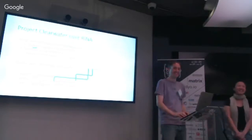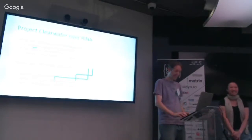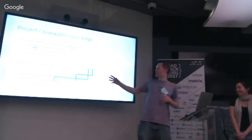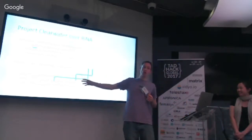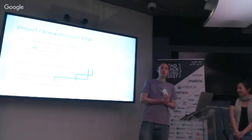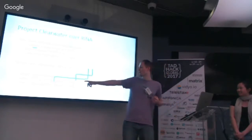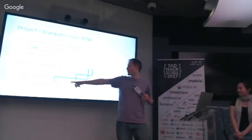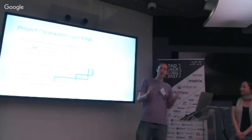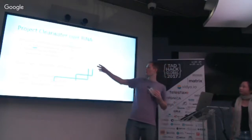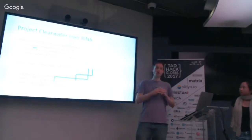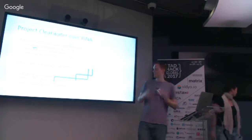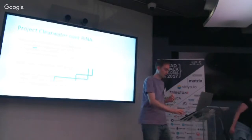In terms of Clearwater's implementation, we use curl — the standard C library for HTTP requests — on the Sprout and Bono side, and we use libevent HTTP on the DIME side. We basically tried to migrate both of those so that rather than using standard TCP, we use RINA instead.